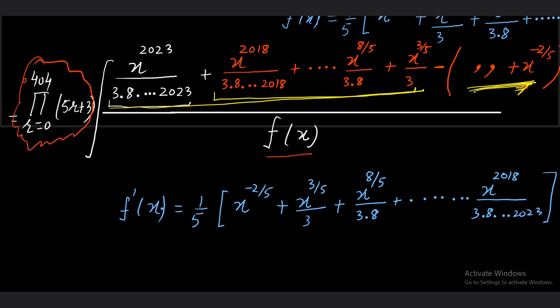The first expression is f(x). The second expression is x^(2018) upon (3·8·...·2018), and so on — all those terms are there. Now if you have the value of f(x) and you go to calculate its derivative, what is f'(x)?